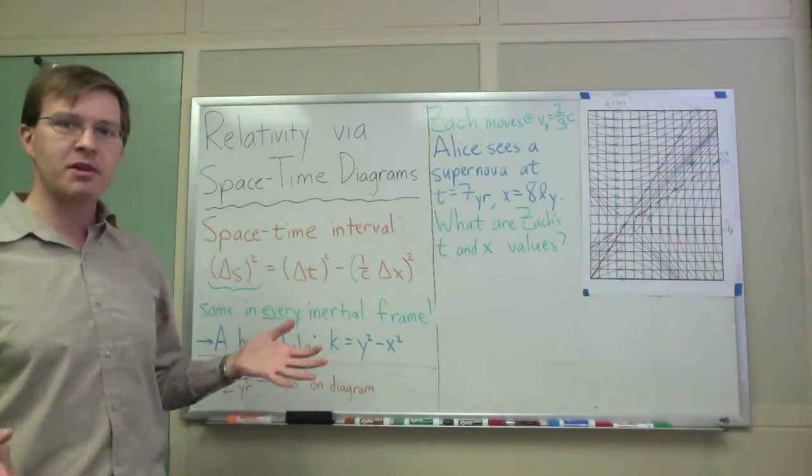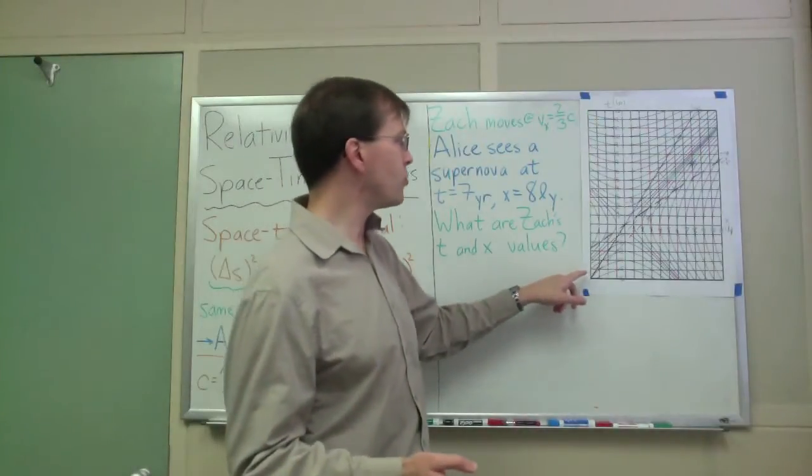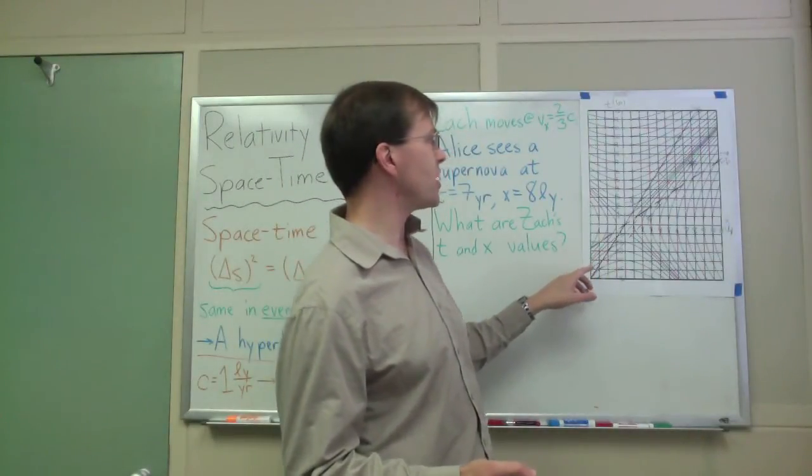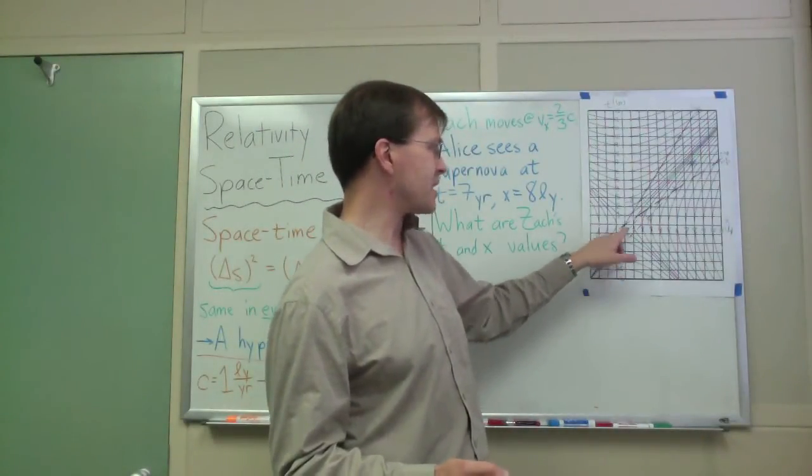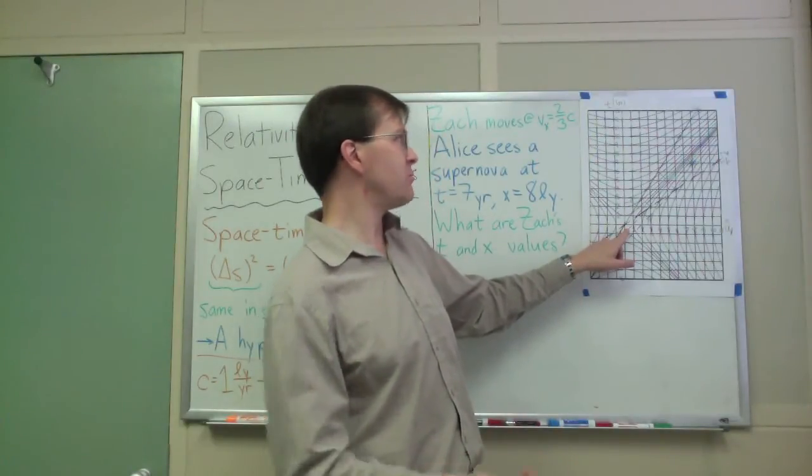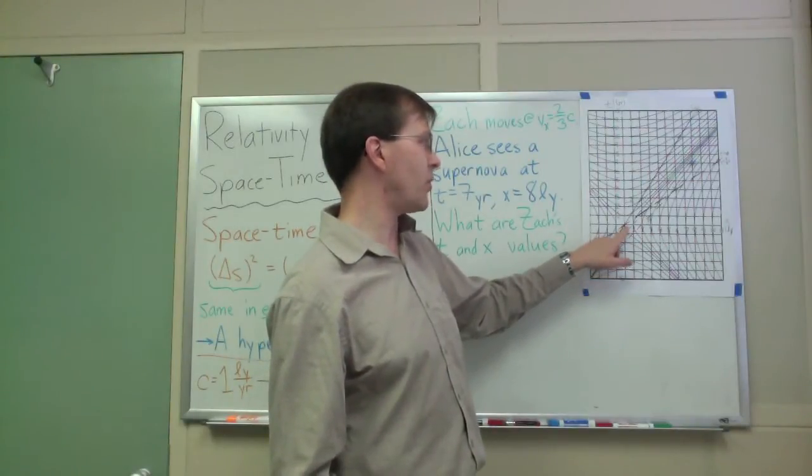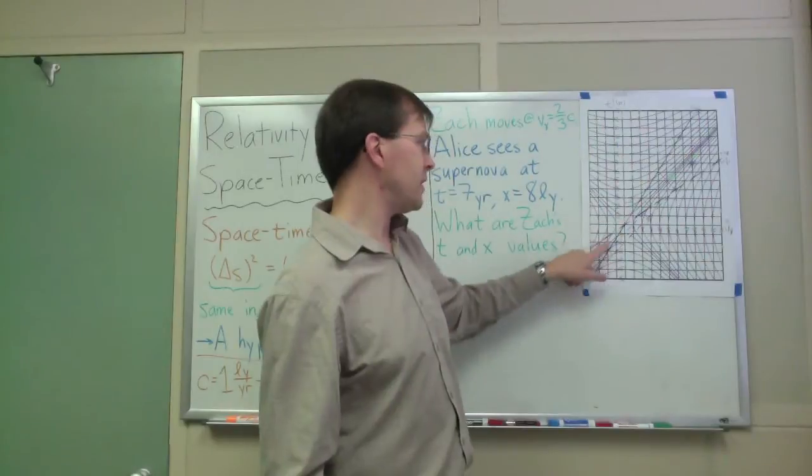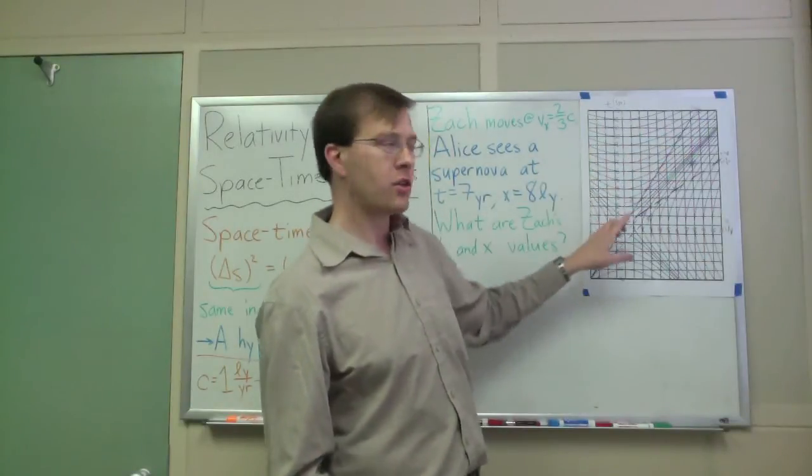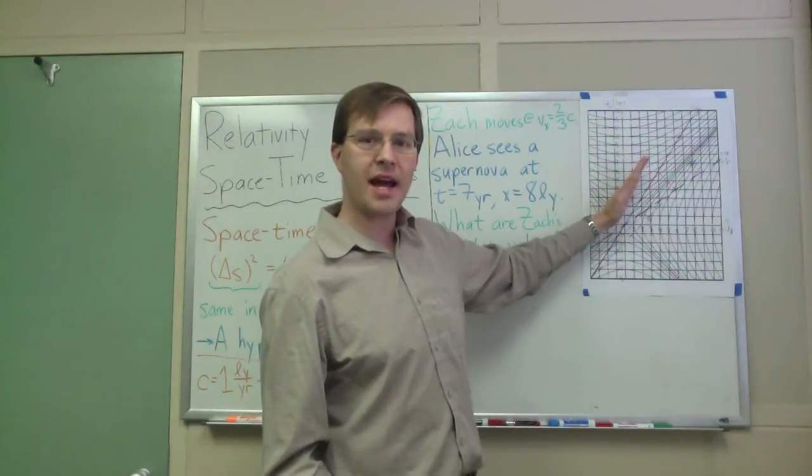This is the same example I've been using for a little bit. Zach is moving at speed 2/3 times the speed of light, 2/3 light years per year, passes by Alice, who's sitting still in the frame of this diagram. He's moving at 2/3 c in Alice's reference frame. He passes by Alice at time equals zero, at the origin of the diagram. And so this line, with a slope of 3/2, three years for every two light years that he travels, this line is Zach's path.